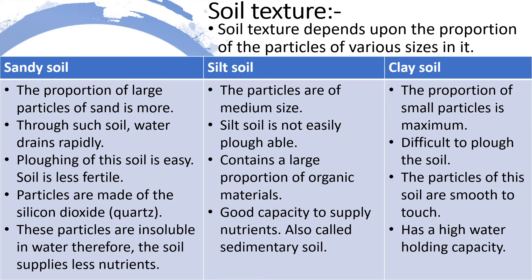Soil structure depends upon the proportion of particles of various sizes in it. The first type of soil structure is sandy soil. The proportion of large particles of sand is more. Through such soil, water drains rapidly and ploughing is easy. The soil is less fertile. The particles are made of silicon dioxide and are insoluble in water.